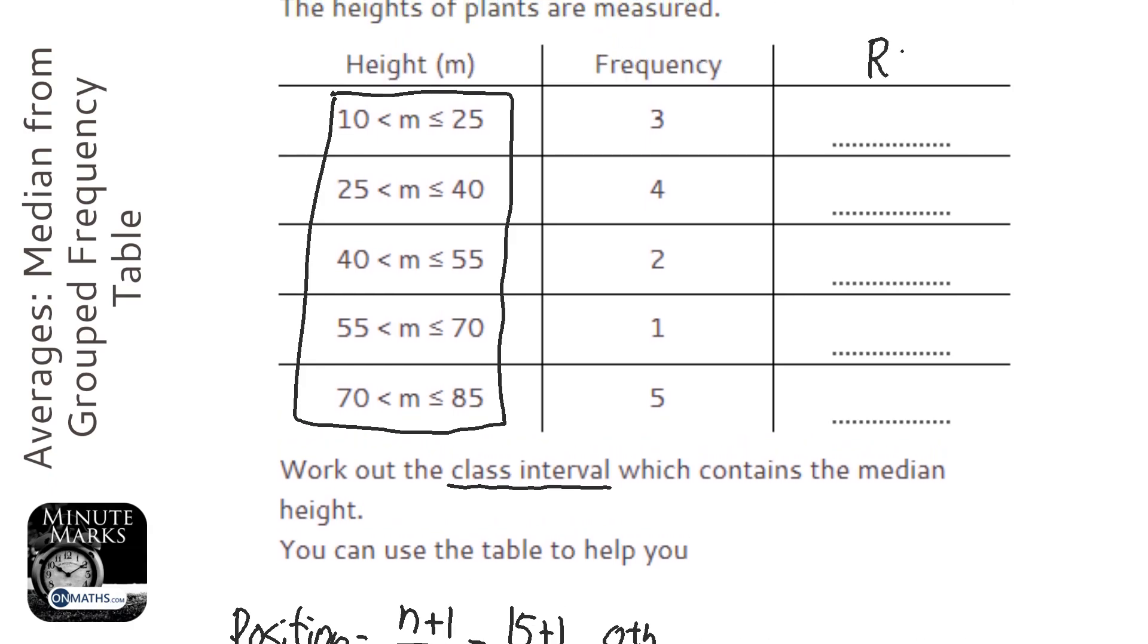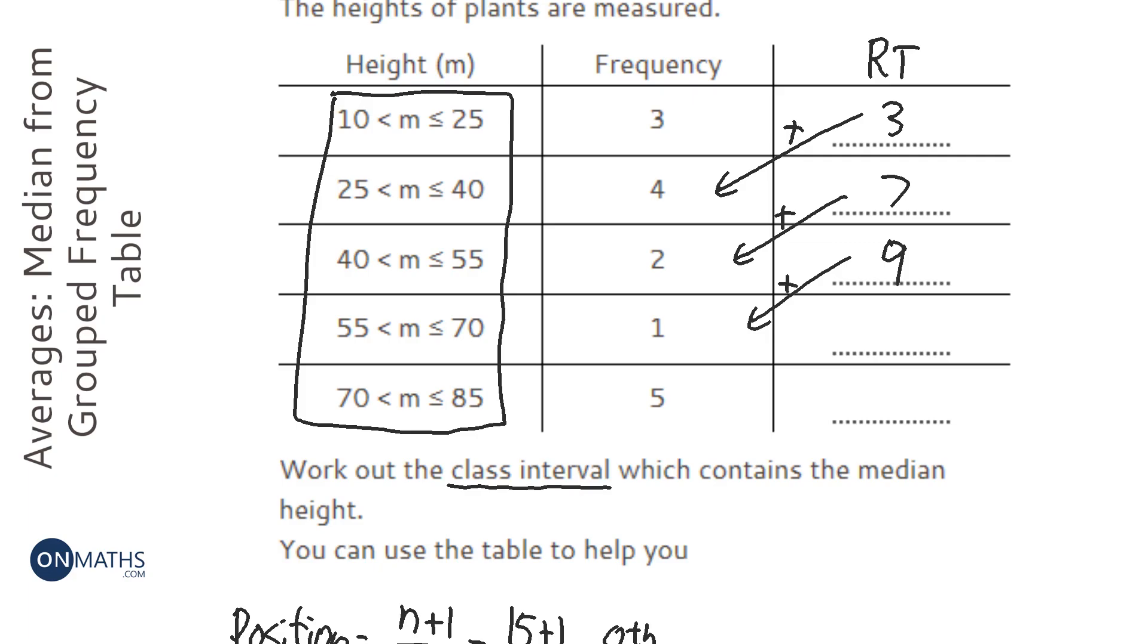Now we're going to do a running total down this column here. So we're going to start with 3 because that's the only value we have so far. Then we're going to add the 4 there to get 7. Then we're going to add the 2 there to get 9, add the 1 there to get 10, and add the 5 there, and hopefully we end up with 15, which we do.